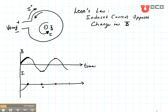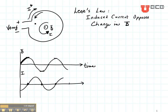If my magnetic field is decreasing, my current is positive. Again, if the magnetic field is increasing, the current is negative, and so on. So this is showing the current that is defined in this positive direction on this particular loop.